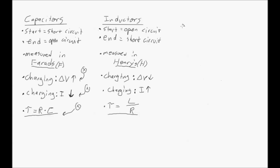Inductors act as an open circuit at time zero, so you get maximum voltage across the inductor, and after five time constants they act as a short circuit — no voltage across the inductor and maximum current flows in the circuit. Inductors are measured in Henrys. The voltage drops from maximum to zero, resulting in a current which rises from zero to its maximum, and the time constant is L over R, where L is the inductance in Henrys.